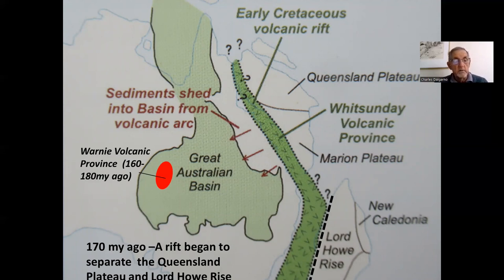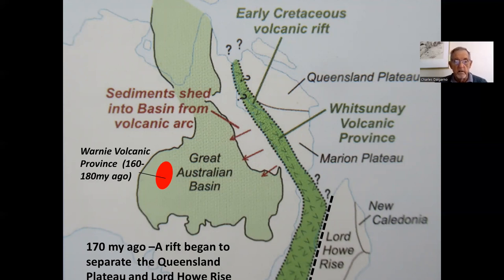Also, at about 180 million years, perhaps through to 160 million years, you had a volcanic province underlying the Great Australian Basin. This has only recently been discovered in drilling, and it accounts for some of the volcanic material found in the basin, although much appears to have been derived from the volcanic arc in the east and the uplifted region resulting from the New England orogenesis or mountain-building phase.